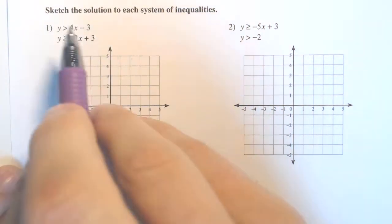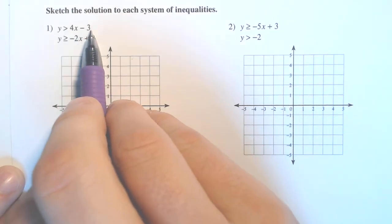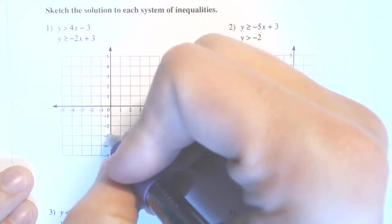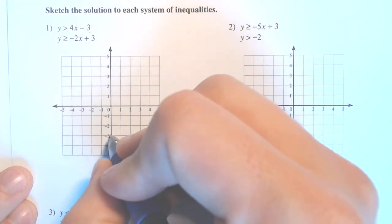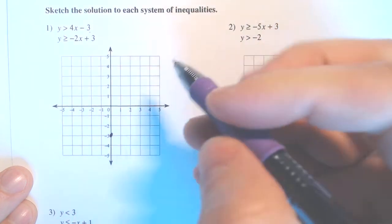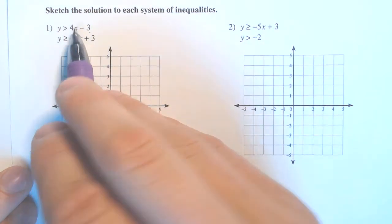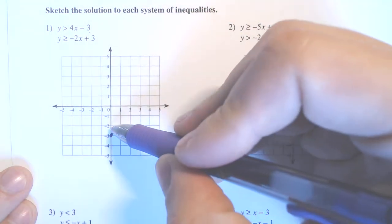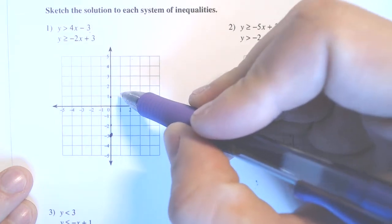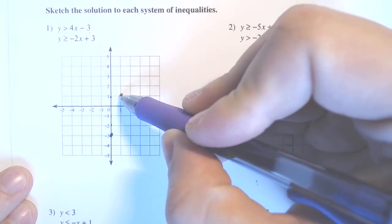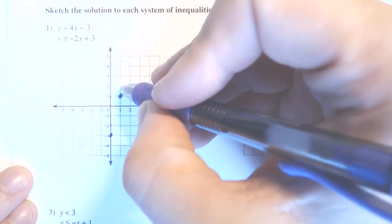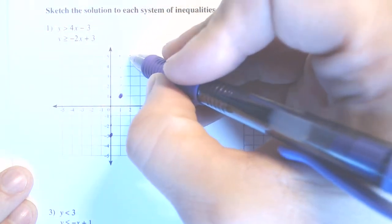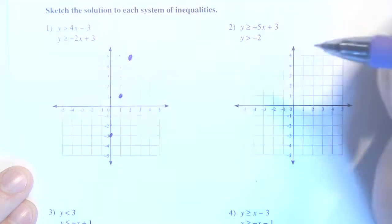We have y greater than 4x minus 3. We are going to plot a point at the y-intercept at negative 3 right here, and then a slope of positive 4. So it's going to go from this point up by 1, 2, 3, 4, and over by 1. And then we're going to continue it — up by 1, 2, 3, 4, and over by 1, just so we get some consistency going on.